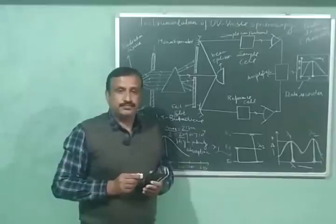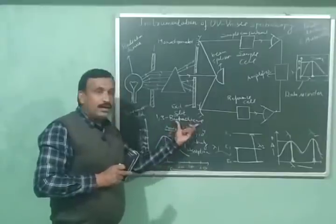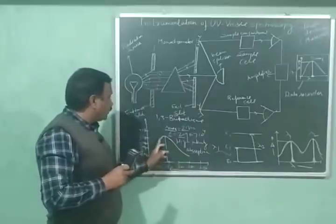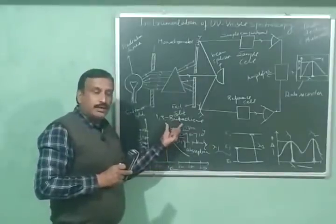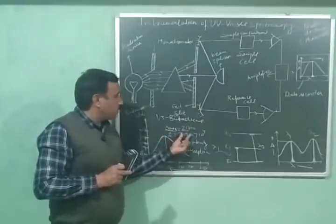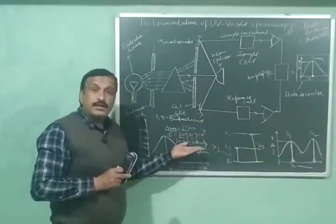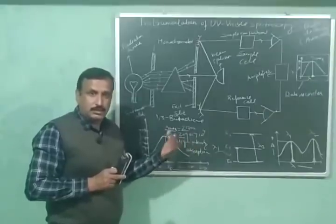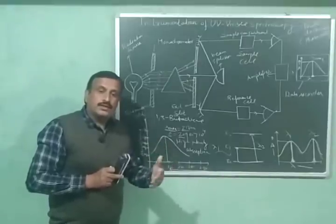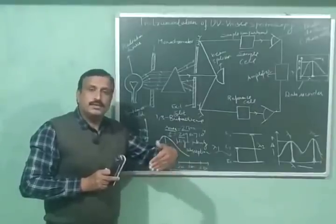As an example, the UV spectrum of 1,3-butadiene is shown. The lambda maximum for 1,3-butadiene is 217 nanometers, and its molar extinction coefficient is 20,900 — which is greater than 10⁴ — indicating a high-intensity absorption. The value of the molar extinction coefficient tells us whether the absorption will be high-intensity or low-intensity.